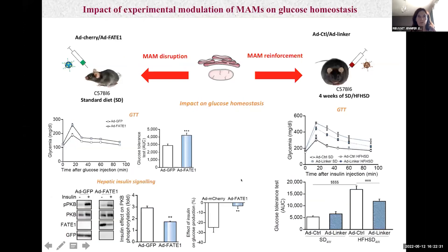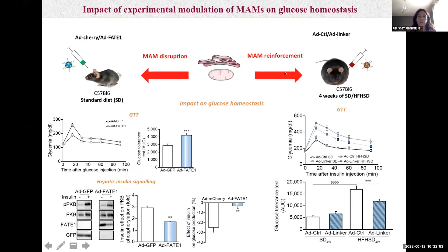Concerning glucose homeostasis, we demonstrate that FATE1-mediated MAM disruption induces glucose intolerance and alters hepatic insulin signaling and action in primary hepatocytes. Reinforcement of MAMs using the linker prevented high-fat, high-sucrose diet-induced glucose intolerance. We were not able to validate the repercussion on hepatic insulin sensitivity, as four weeks of high-fat, high-sucrose diet is not sufficient to induce hepatic insulin resistance.